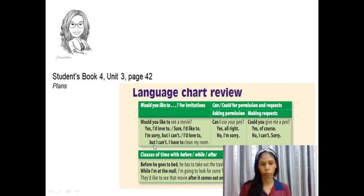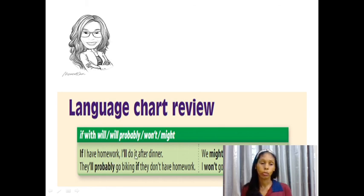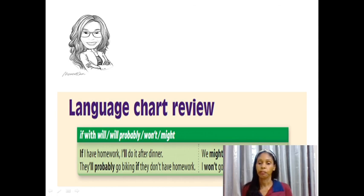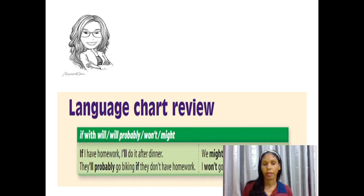To summarize unit 3: 'would you like to' for invitations, 'can' and 'could' for permission and requests, and sentences with before, while, and after for time sequencing. First conditional review: 'If I have homework, I will do it after dinner.' 'They will probably go biking if they don't have homework.' 'We might go to the movies if we have time.' 'I won't go to school if I am sick.' One condition determines whether the action happens.